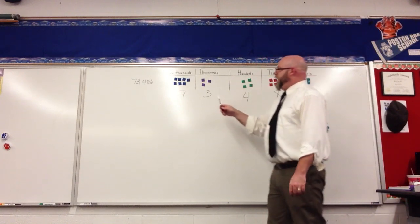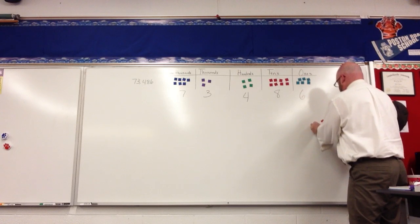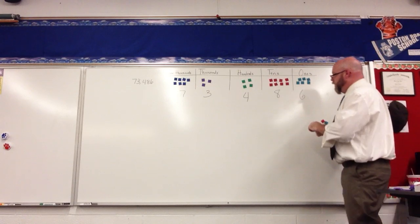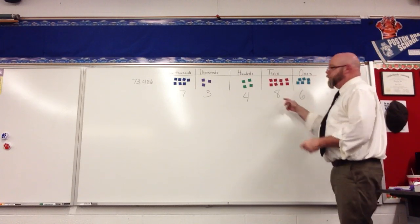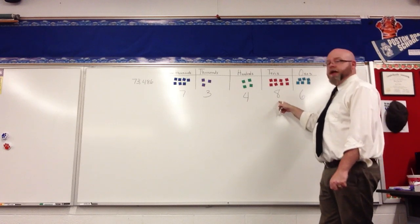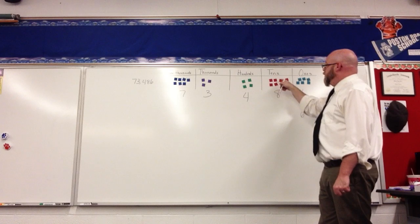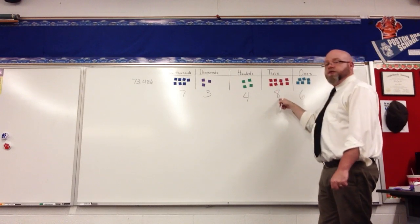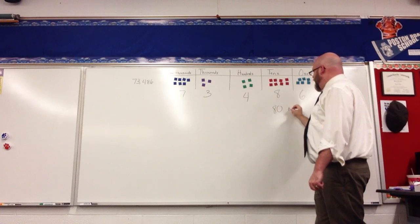So if I have, starting down here at 6 ones, that's exactly what I have. I have 6 ones. So I would show that as 6. Here I have 8 tens. So I would count by 10 eight times: 10, 20, 30, 40, 50, 60, 70, 80. So this represents 80 or 8 tens.